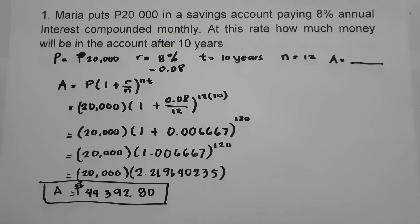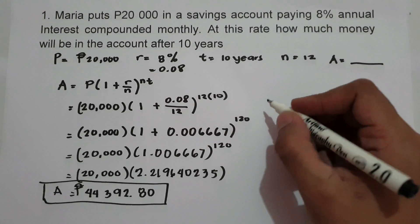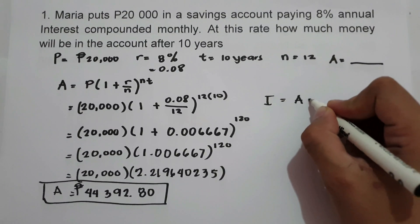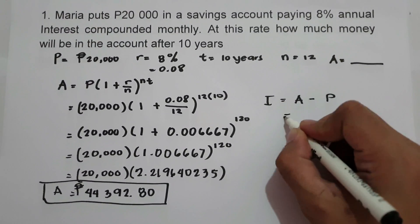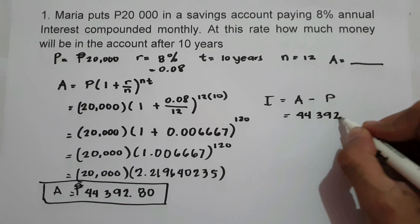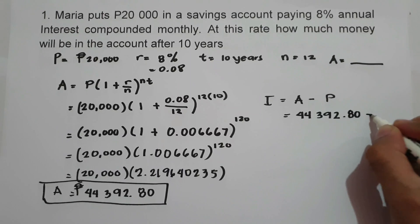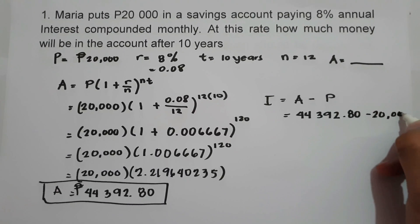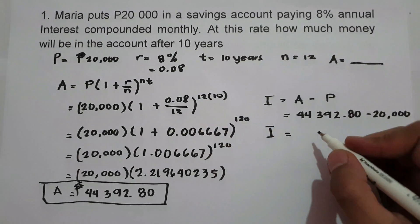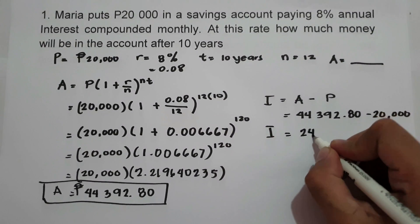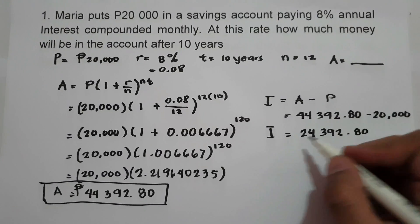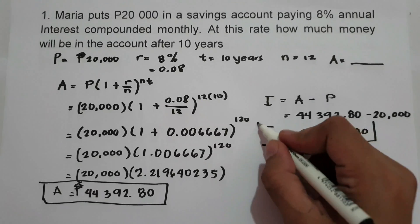What about the interest? To find the interest, interest equals future value minus principal. So the interest after 10 years is 24,392.80 pesos. This will be our answer.